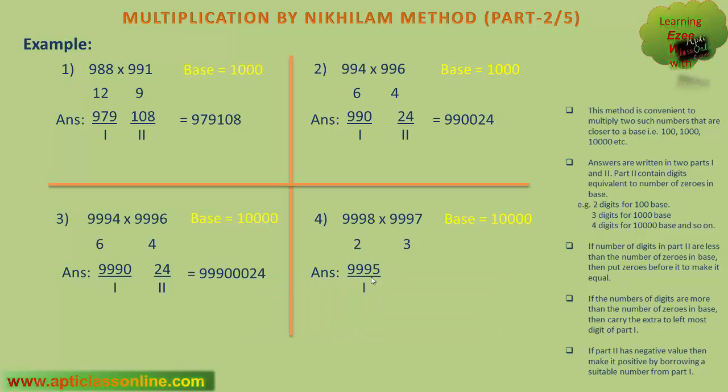The second part will be the multiplication of these two, that is 6. But second part must contain 4 digits, as the base contains 4 zeros. So we will put 3 zeros before 6, so the final answer will become 99950006.